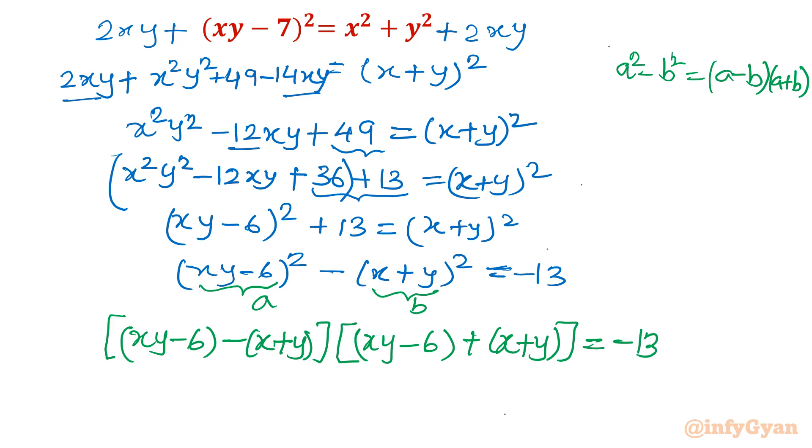Now one important thing. If I call the first bracket p and the second bracket q, then remember that p must be always less than q. The first bracket would always be less because you are taking the difference xy minus 6 minus x plus y, and in the q bracket xy minus 6 plus x plus y. This sign is important.